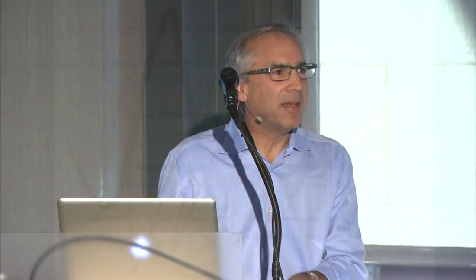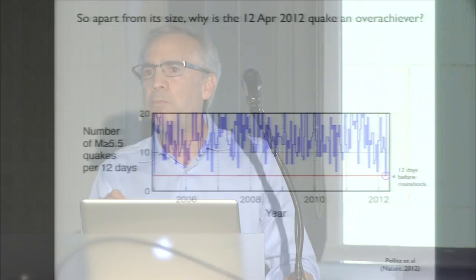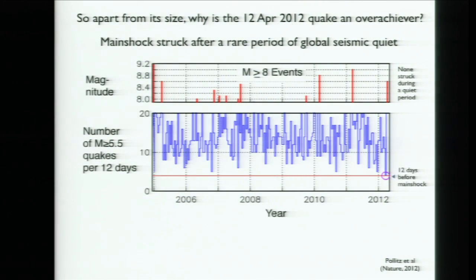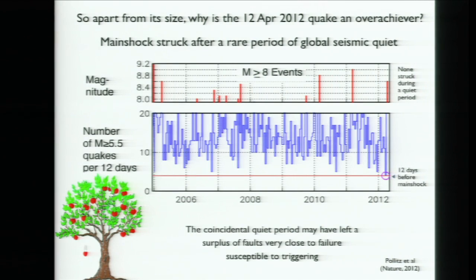Then I stumbled on one more interesting thing. Why is this earthquake such an overachiever? I looked at the week or two before this earthquake — the number of earthquakes every 12 days around the world. The 12 days before this earthquake were extraordinarily quiet. This earthquake occurred after the quietest two weeks we've ever had in the last 40 years. All the other big ones we looked at happened to occur during noisier times. Here's what I think is going on: imagine an apple tree where apples are dropping at maybe one per day. If you go through a 12-day period where no apples fall, you have many more overripe apples on the tree. The love waves rush up and shake the trunk, and if you've had that quiet period, you'll get much more falling than normal.